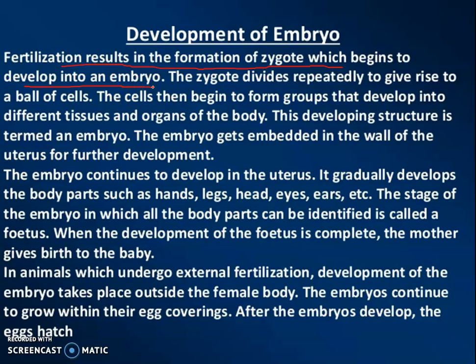As we discussed in the previous lecture, fertilization means when the sperm and egg fuse, a zygote is formed. The zygote then slowly develops and converts into an embryo. We also discussed two types of fertilization: one is internal fertilization and the second is external fertilization.